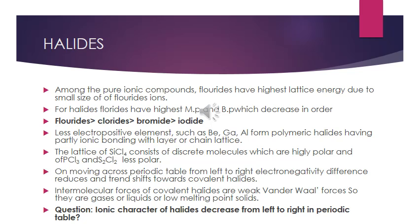Here is a short question: why does the ionic character of halides decrease from left to right in the periodic table? Because moving left to right, the electronegativity difference between the metal and the halogen decreases.